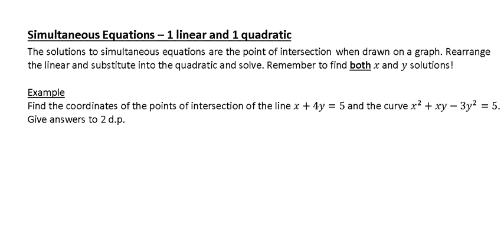The solution to the simultaneous equations are the point of intersection when drawn on a graph. For example here, this equation represents a straight line and this equation represents a curve. I don't know what they look like, I'm just going to guess one's going to be that sort of shape and then the other one would be a straight line.